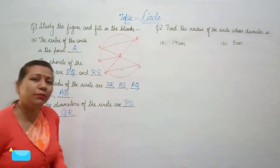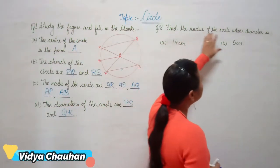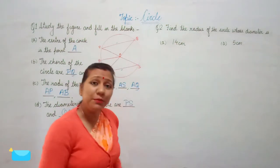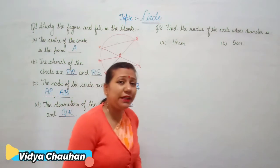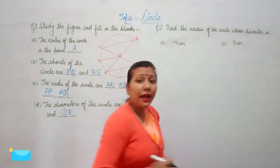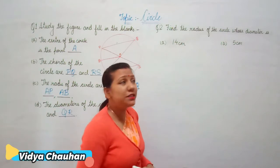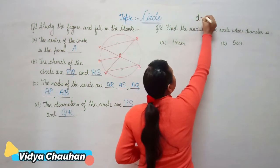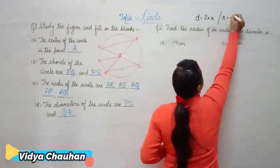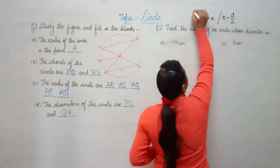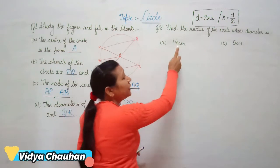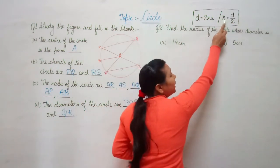This is how we answer questions related to circles when given in labeled form. Coming to the second question: find the radius of the circle whose diameter is given. We use the relation between diameter and radius. Diameter equals two times radius, or radius equals diameter divided by two. Since diameter is given, we use the second relation to find radius.